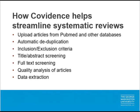Through the prior demonstrations, you can see how Covidence helped streamline the process of performing systematic reviews at the various steps in the process. This includes uploading articles from PubMed and other databases, automatic deduplication of those articles, indicating inclusion-exclusion criteria, performing title-abstract screening, performing full-text screening, and finally quality analysis of the articles and data extraction.